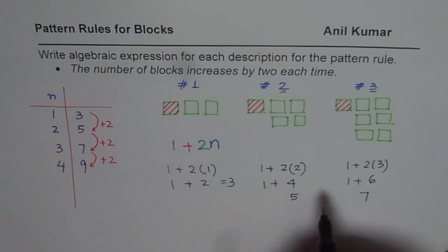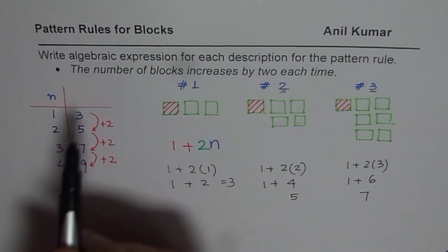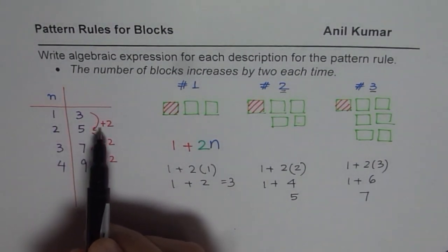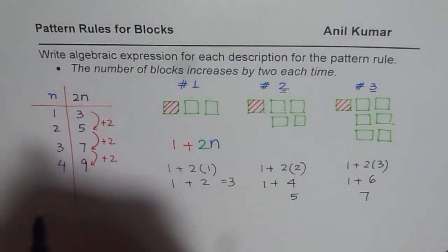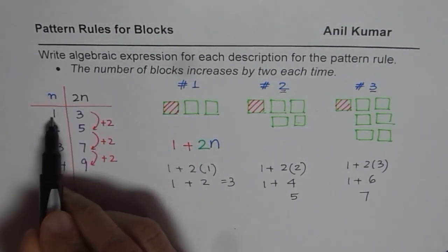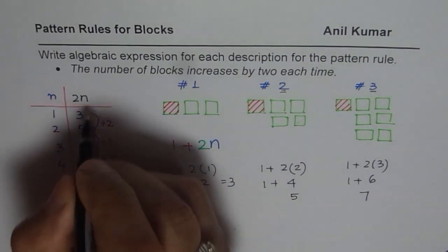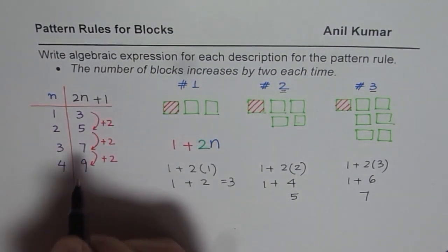My other way of getting the expression is from here. What we see is that the number increases by two. So times two is something we are looking into. Two times n. Now if I do two times one what do I get? I get two. How do you get three? By adding one. So let me add one to it.